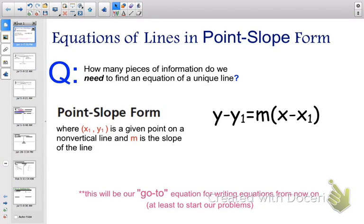Hello, this is the notebook and video for topic 1 in chapter 4, equations of lines in point-slope form. So the biggest question is how many pieces of information do we need to find an equation of a unique line? And that answer is there's going to be two things, and they can come in many forms. We're going to answer this question as we go in different scenarios.